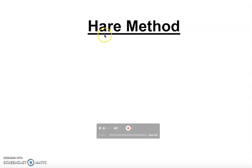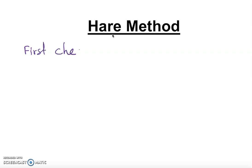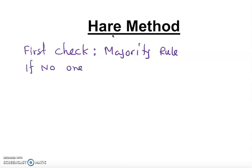In this video I'm going to talk about the Hare method. The Hare method works like this: first, we have to check if there is a winner by majority rule. If we see a winner by majority rule, good — we don't have to continue. What is majority rule? If anyone gets more than 50 percent of the votes, that person is the winner.